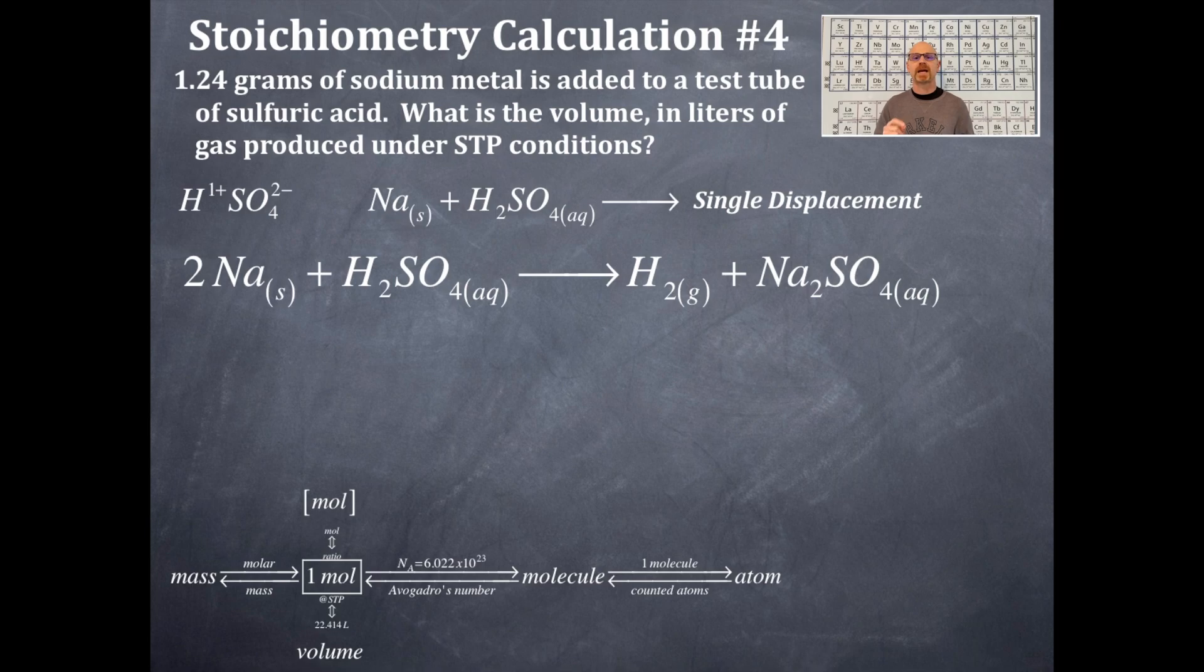So here is our balanced chemical equation. The sodium metal is displacing the hydrogen. Hydrogen is by itself. And that's a diatomic. And that's H2. And that's a gas. And then I have Na2SO4 because the charge on the sodium is a 1 plus. The charge on the sulfate is a 2 minus.